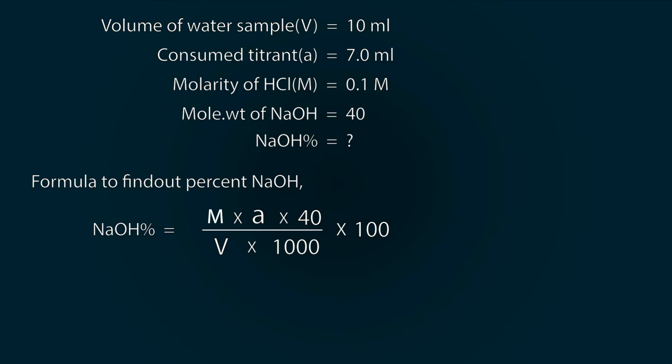Now start putting the values. So we get NaOH percentage is equal to 0.1 multiply by 7 multiply by 40 divided by 10 into 1000 multiply by 100, and we get a percentage as 0.28 percent.